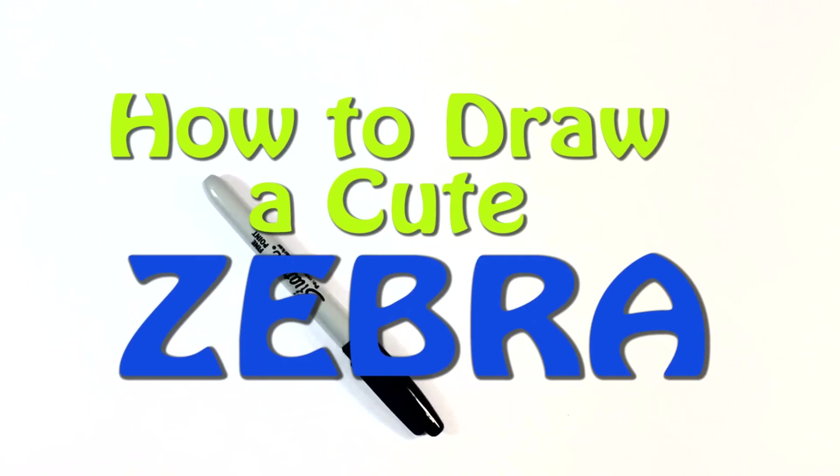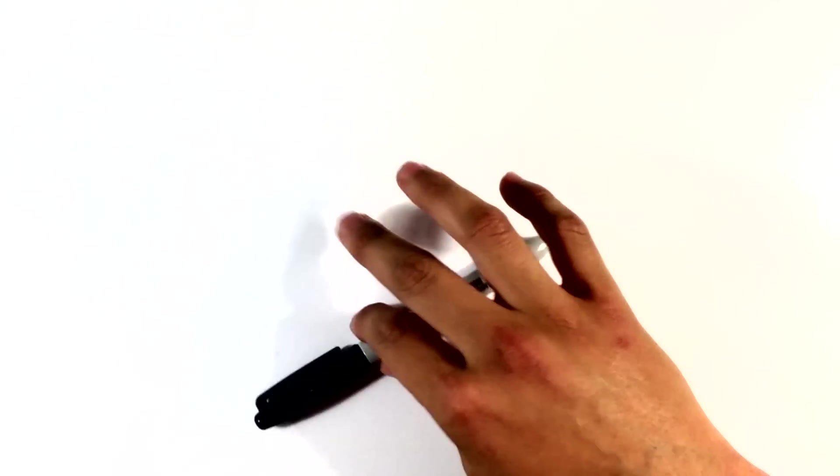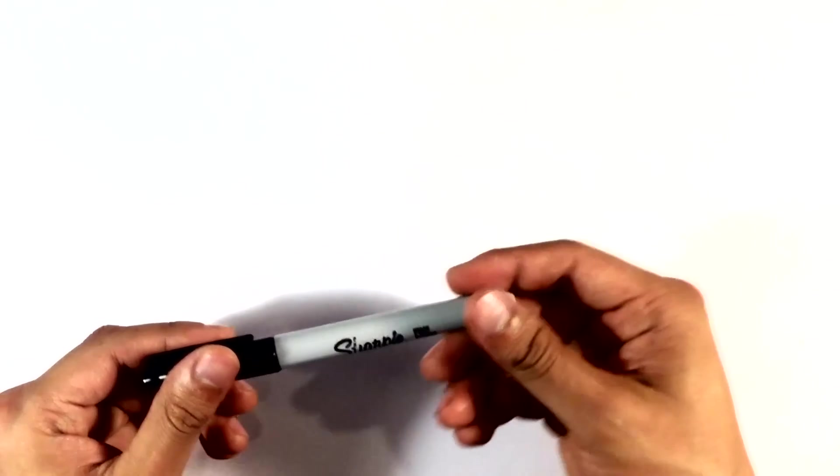Hey guys, what's up? How's it going? This is Easy Pictures to Draw and I'm gonna be going over cute things and caricatures today. I'm gonna go over how to draw a cute zebra and I'm gonna be using this Sharpie just to show you can do it with very cheap art supplies. So let's kind of get started.